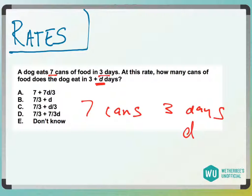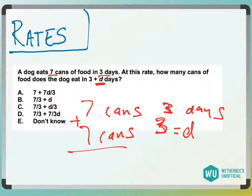I'm going to make D equal to three. The best thing to make it equal to would be three, because I don't even really have to do any math then. I know that in three days it eats seven cans. How many cans of food does the dog eat in these three days plus D days, which we made three? Seven plus seven is 14 total cans.